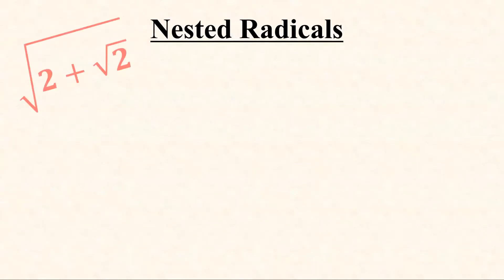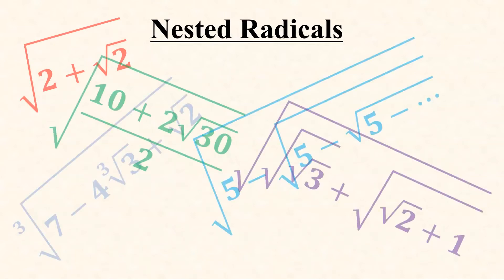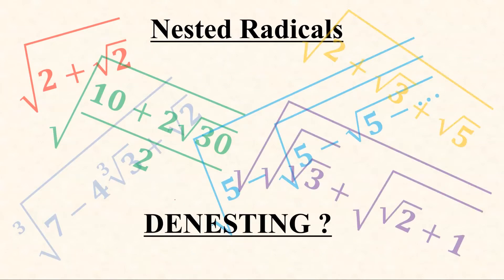When we are doing mathematics, we actually encounter many kinds of nested radicals, which means radicals inside radicals. Naturally, many of them cannot be denested — that is, many of them cannot be reduced to fewer radicals.